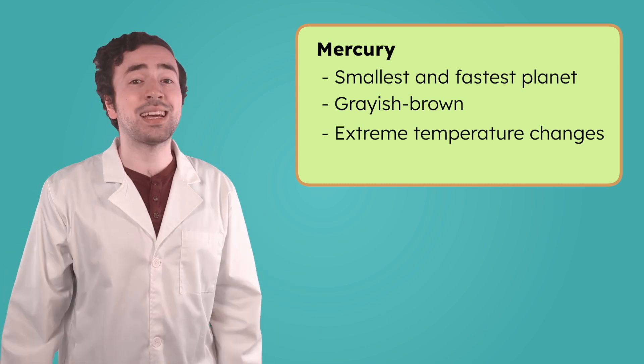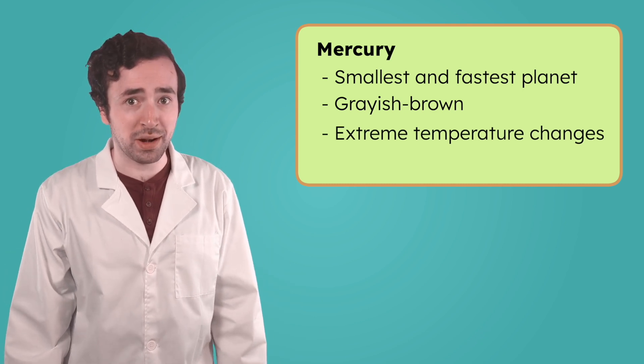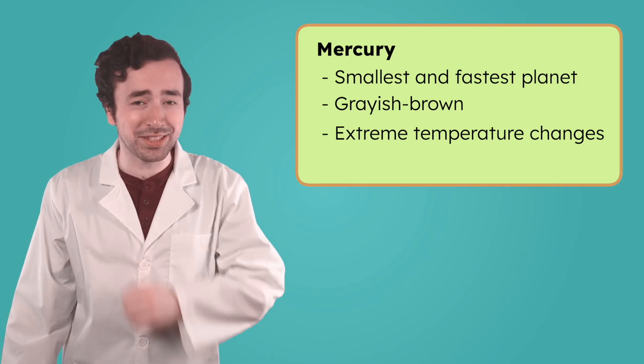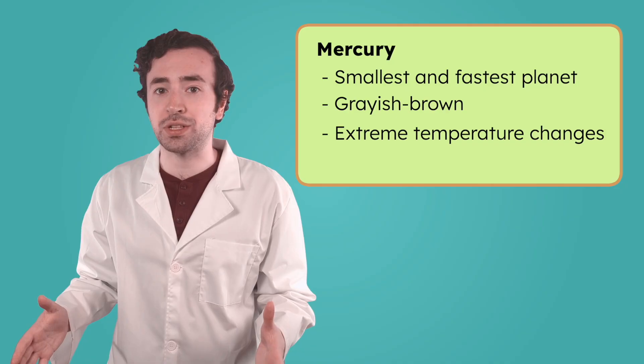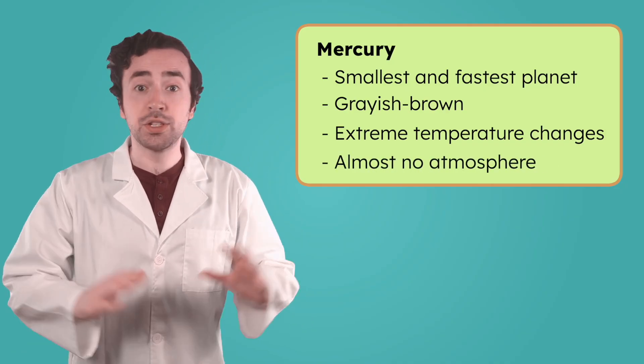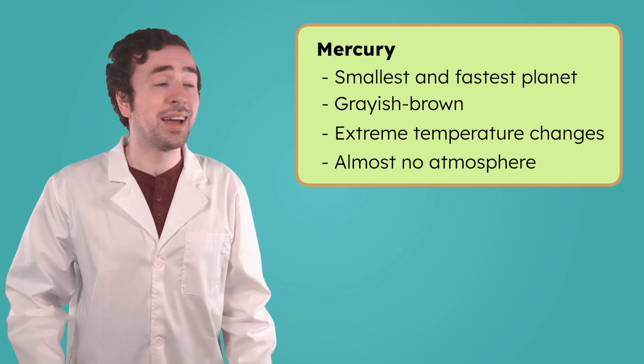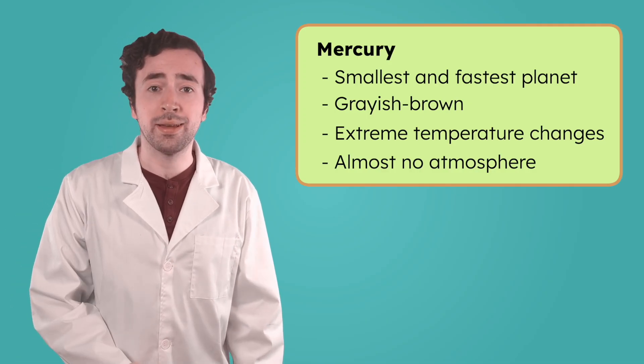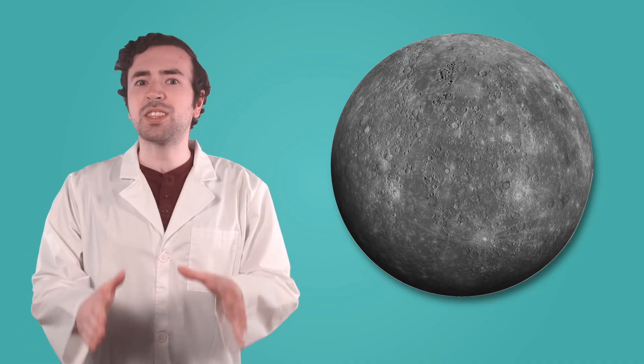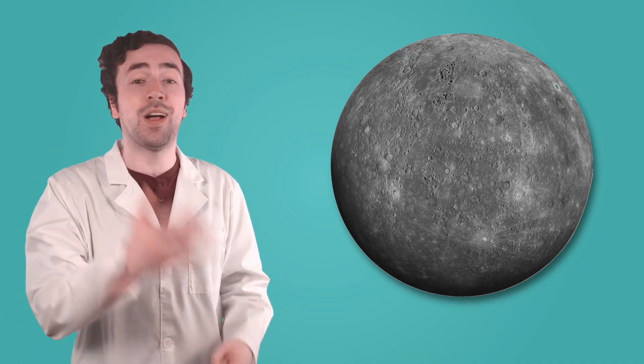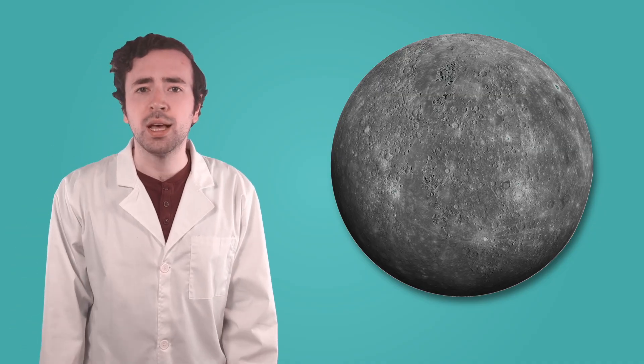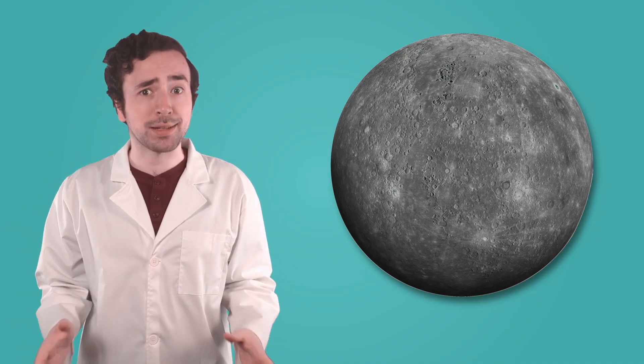During the day, it gets as hot as 800 degrees Fahrenheit. And at night, it drops to negative 290 degrees. This huge temperature difference is because Mercury has almost no atmosphere. There's nothing to protect the planet from the sun's heat during the day, and nothing to keep it warm at night. And Mercury's missing atmosphere doesn't only affect its temperature. It also means there's nothing shielding the planet from chunks of rock flying through space. Over time, they've crashed into Mercury's surface, leaving behind craters. Lots and lots of them.